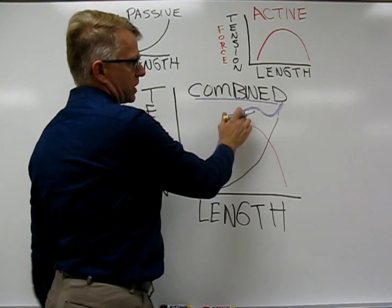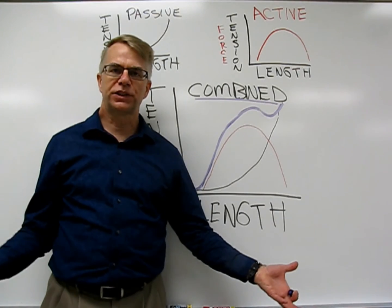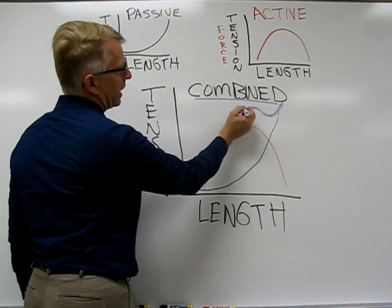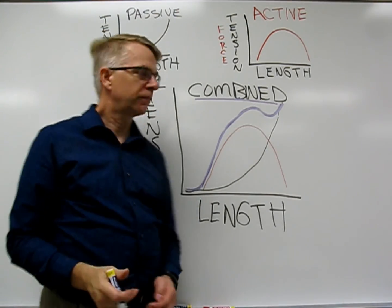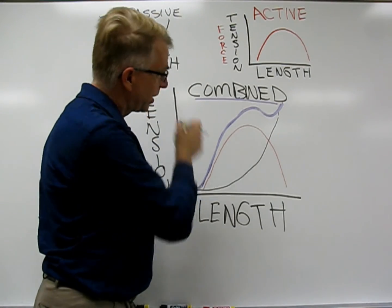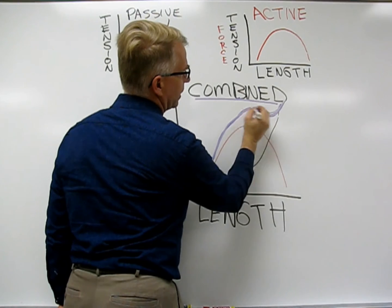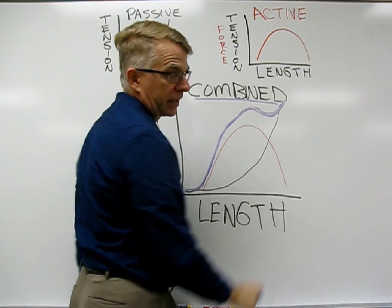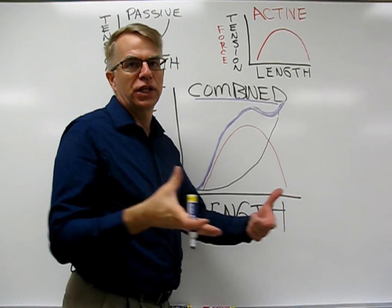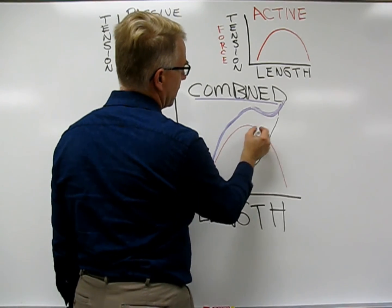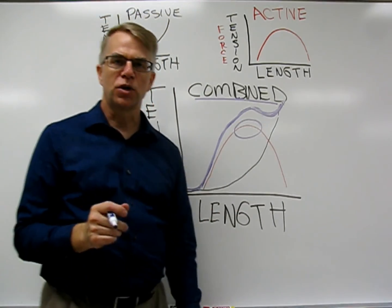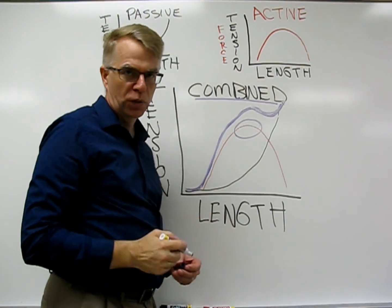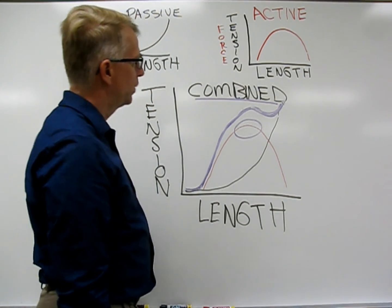When you put the tendon — the non-contractile part — and the muscle — the contractile part — of the muscle-tendon unit together, the combined length-tension curve is what it can actually develop. One important thing to notice is that at the elongated end, you do get a lot of tension, but it is almost all passive tension with very little active tension. It's more in the middle range where you get good contraction and shortening of the muscle with a fair amount of force from the active, contractile component of the muscle-tendon unit.